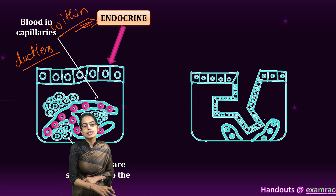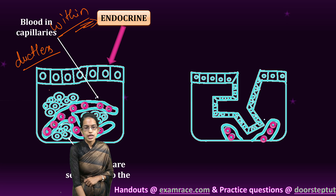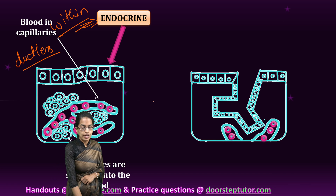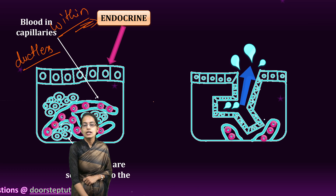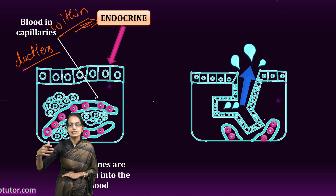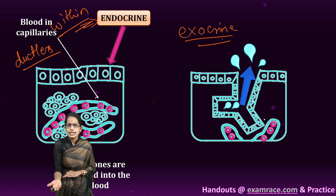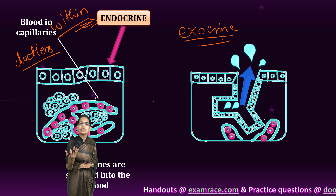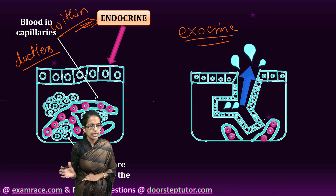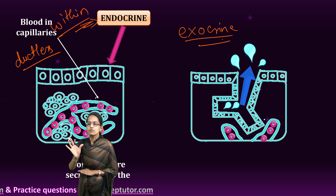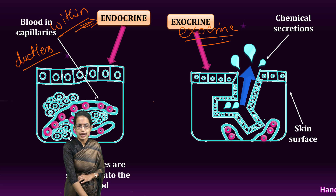On the other hand, we have exocrine glands. The word exo means outside. Since it is an exocrine gland, the secretions are released through the ducts and out — this is an example of exocrine glands. Sweat gland is a very common example of an exocrine gland. Sweat is released outside, and therefore we call this an exocrine gland.